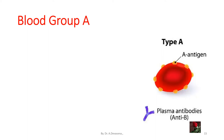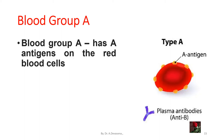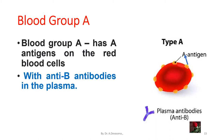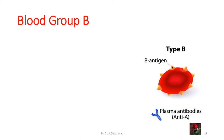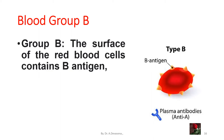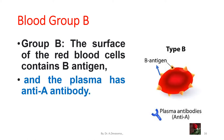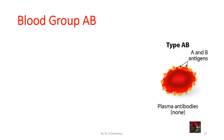Here is a representation of blood group A. In blood group A, it has A antigens on the red blood cells. This is the A antigen that is present on the surface of the red blood cells, with anti-B antibodies in the plasma. Here is a representation of blood group B. Blood group B has B antigens on the surface of the red blood cells. The plasma has anti-A antibody for blood group B.